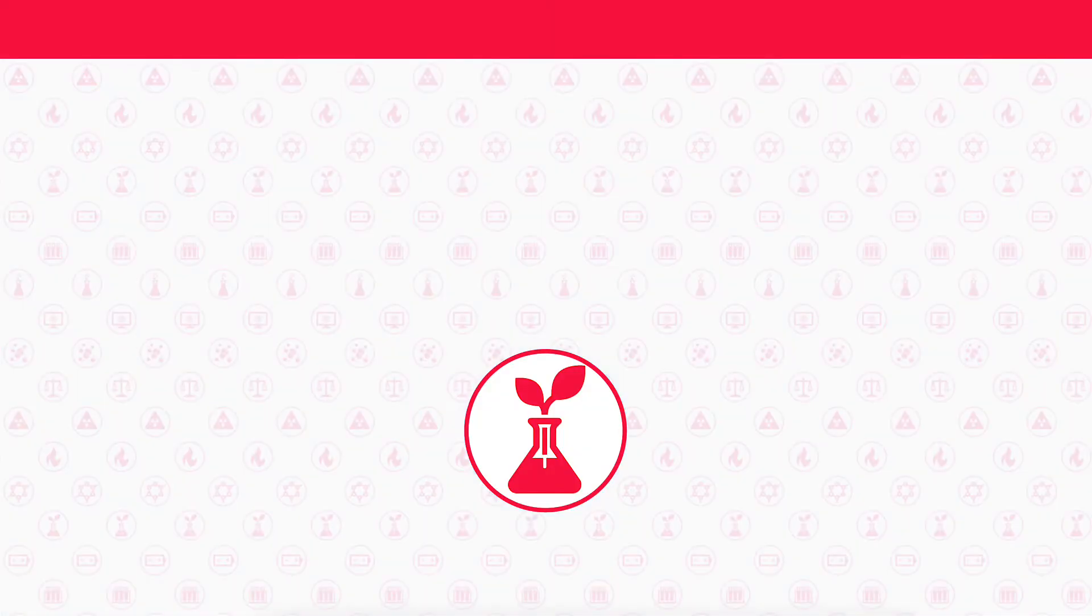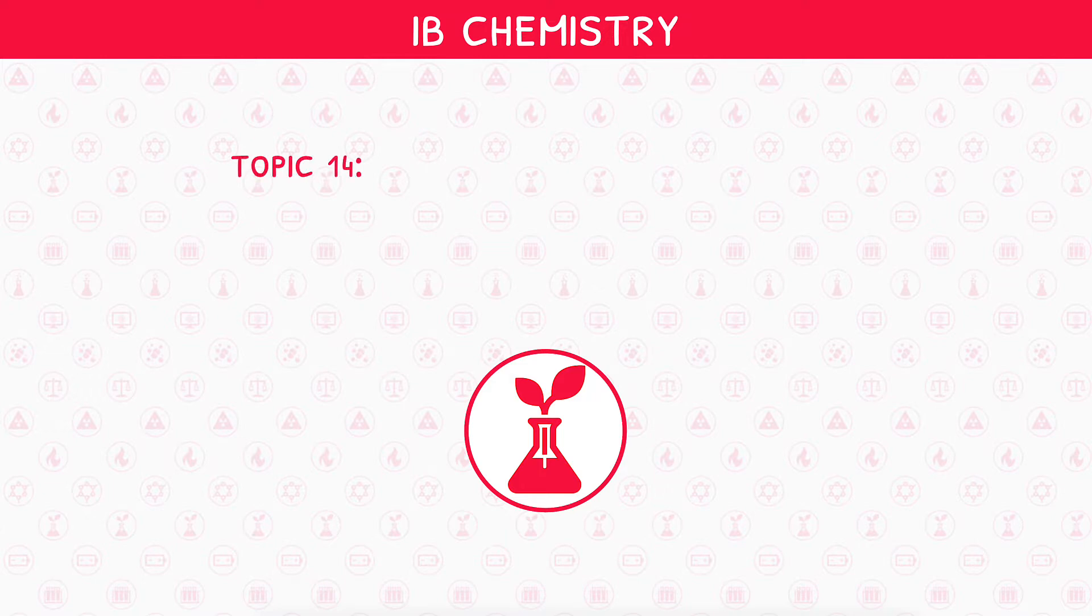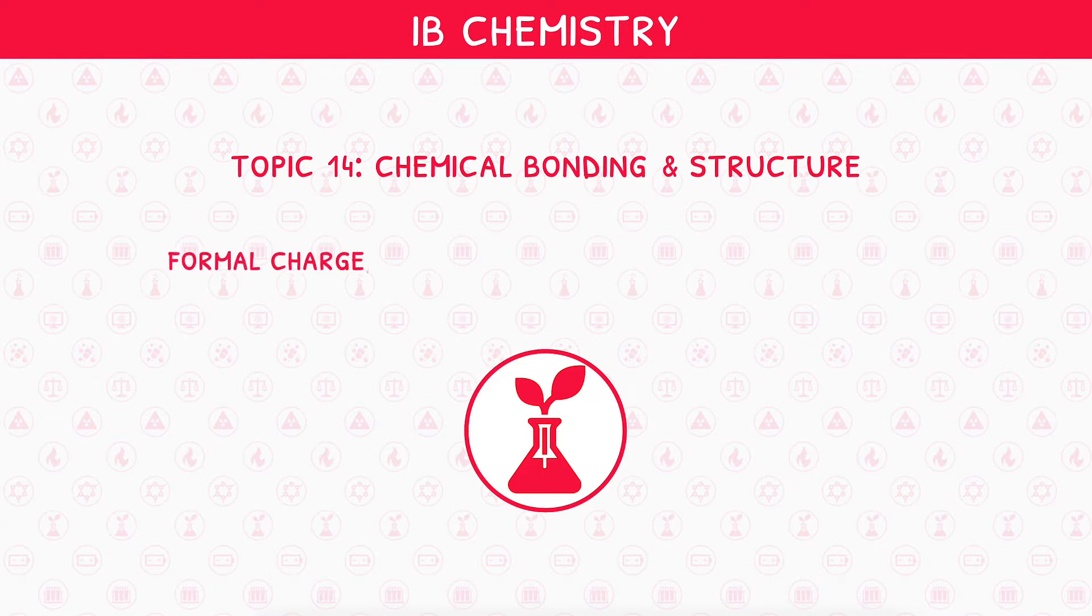Welcome back to our higher-level IB Chemistry video series. This is the first video in IB Chemistry Topic 14, Chemical Bonding and Structure, where we will be looking at Formal Charge, Advanced VSEPR, and Sigma and Pi bonding.